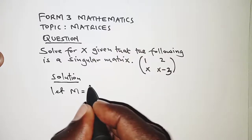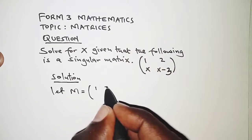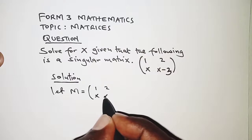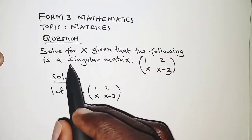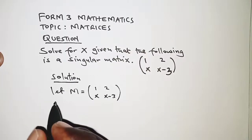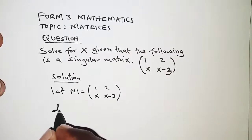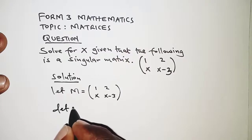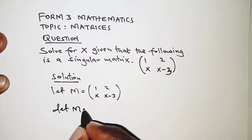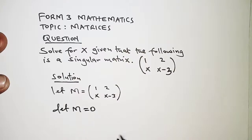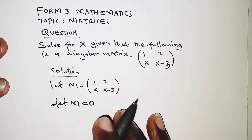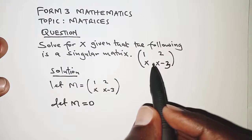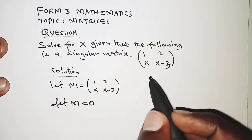From the definition of a singular matrix, we know that the determinant of the matrix is zero. So we have been told that the matrix here is a singular matrix, so we are going to get its determinant and equal to zero.